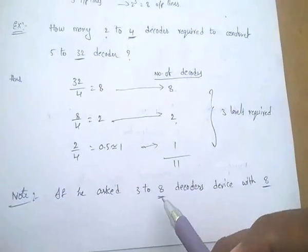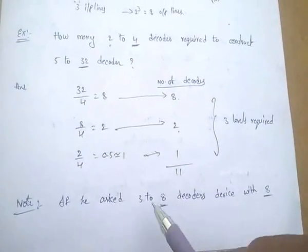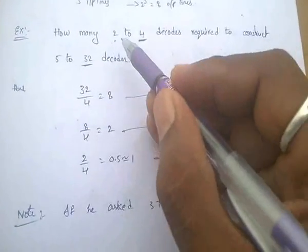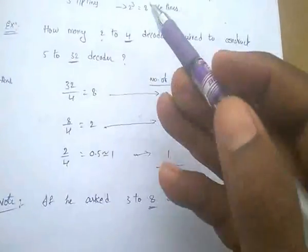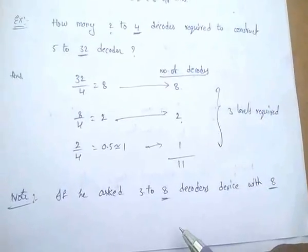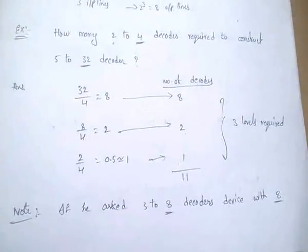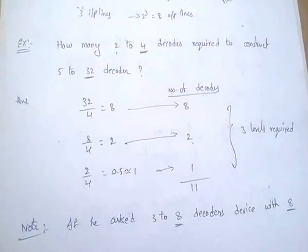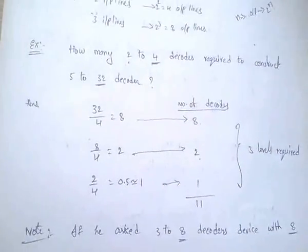Similarly, if asked about 3-to-8 decoders, the technique is the same: divide 32 by 8, and continue dividing. Likewise, we can solve any problem of this type.